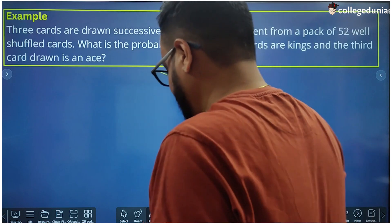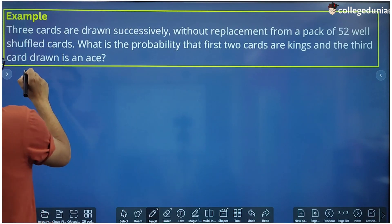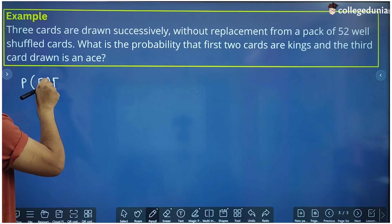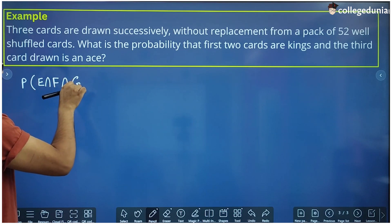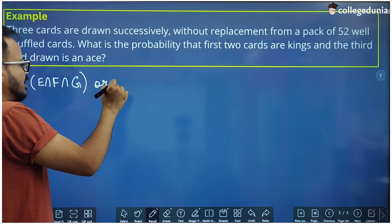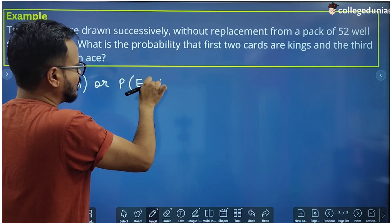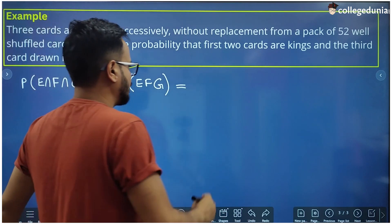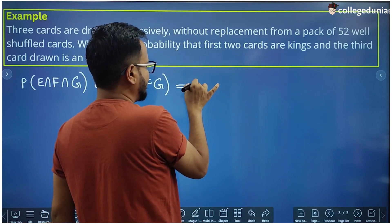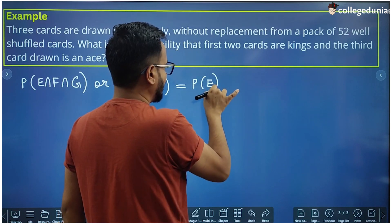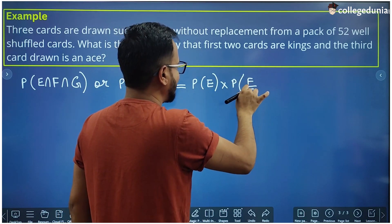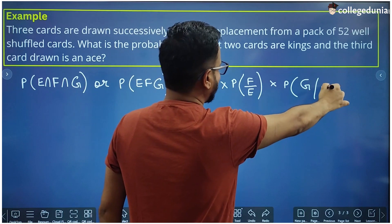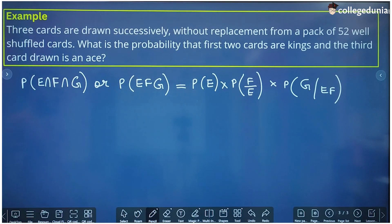Now we will see what happens when the number of events is 3. For 3 events E, F, and G, we can write P(E∩F∩G) — also written as P(EFG) — and according to the Multiplication Theorem of Probability, this equals P(E) · P(F|E) · P(G|EF), where P(G|EF) is the probability of G when both E and F have already occurred.